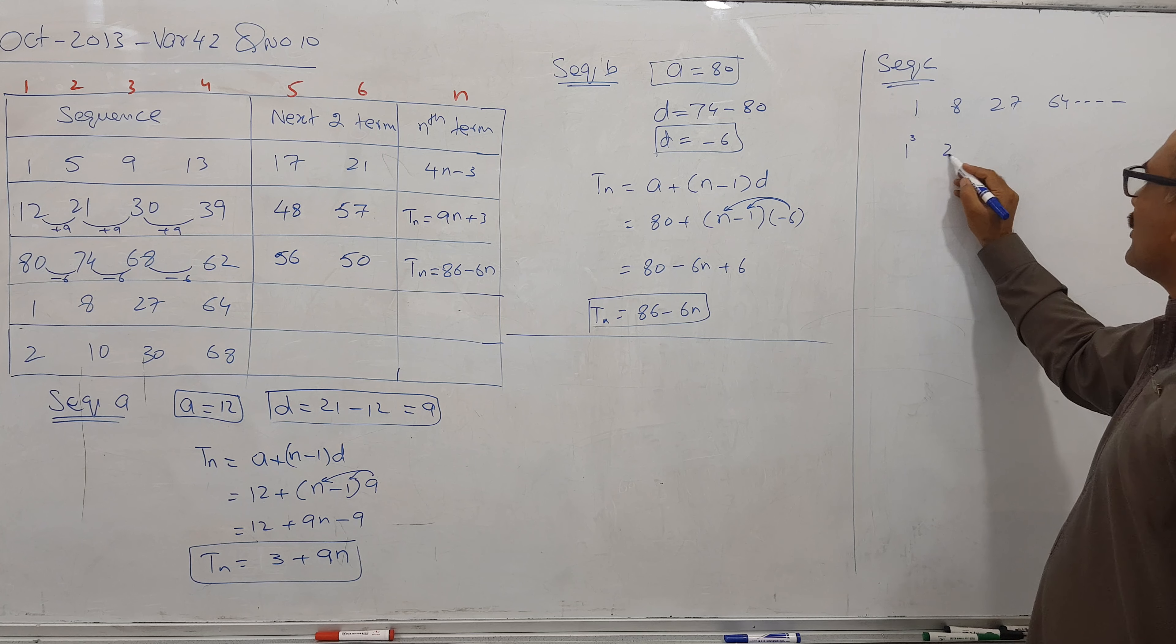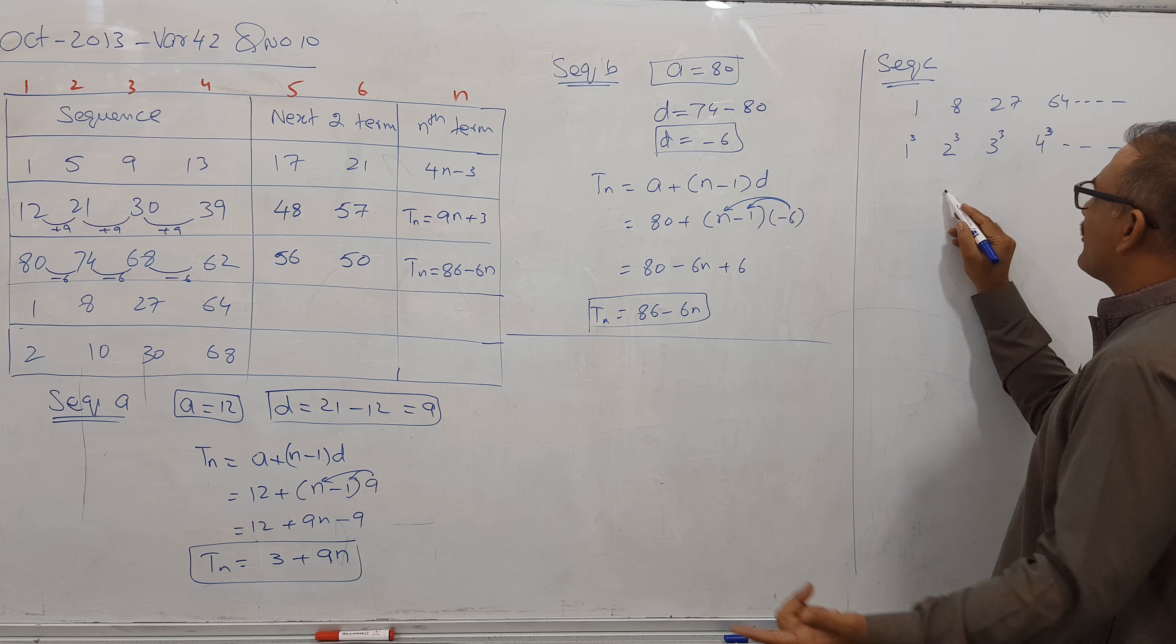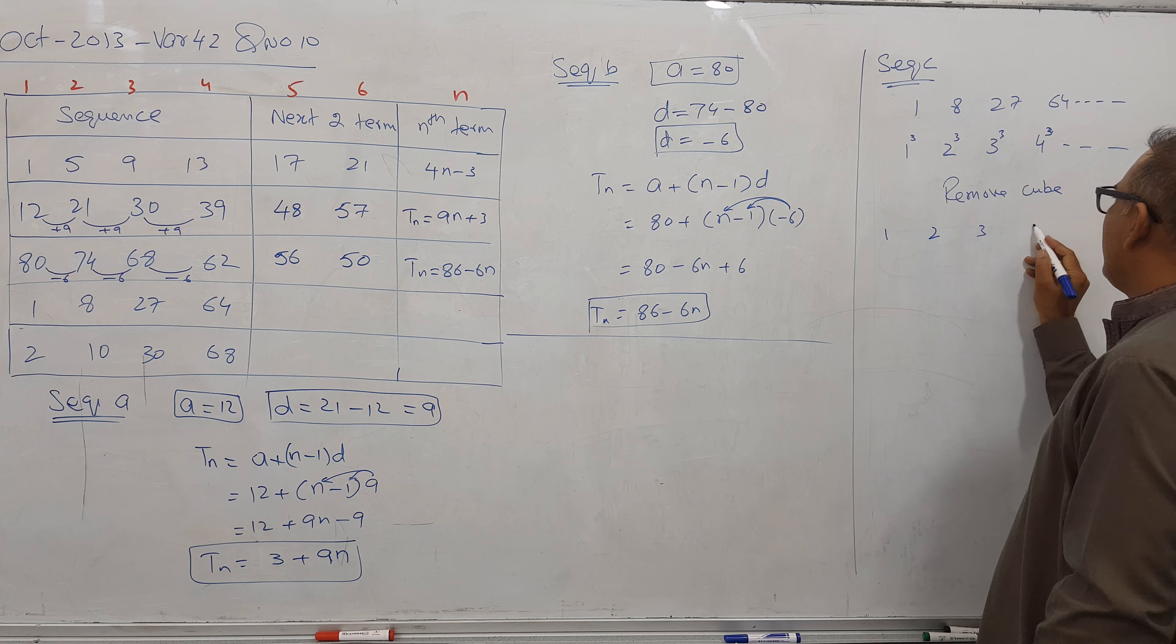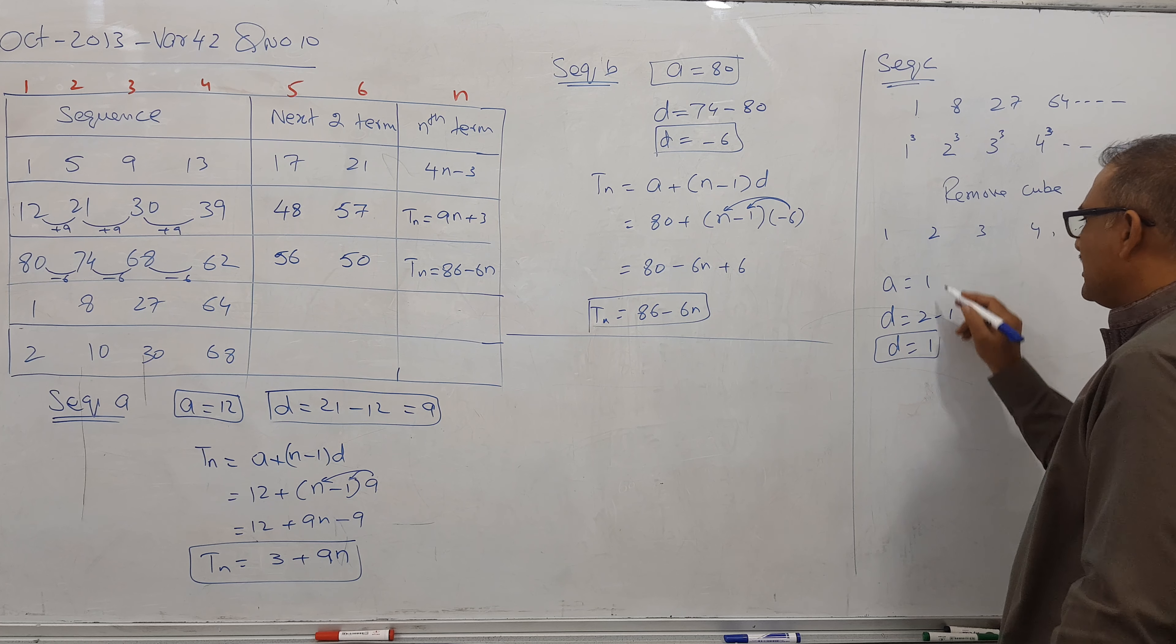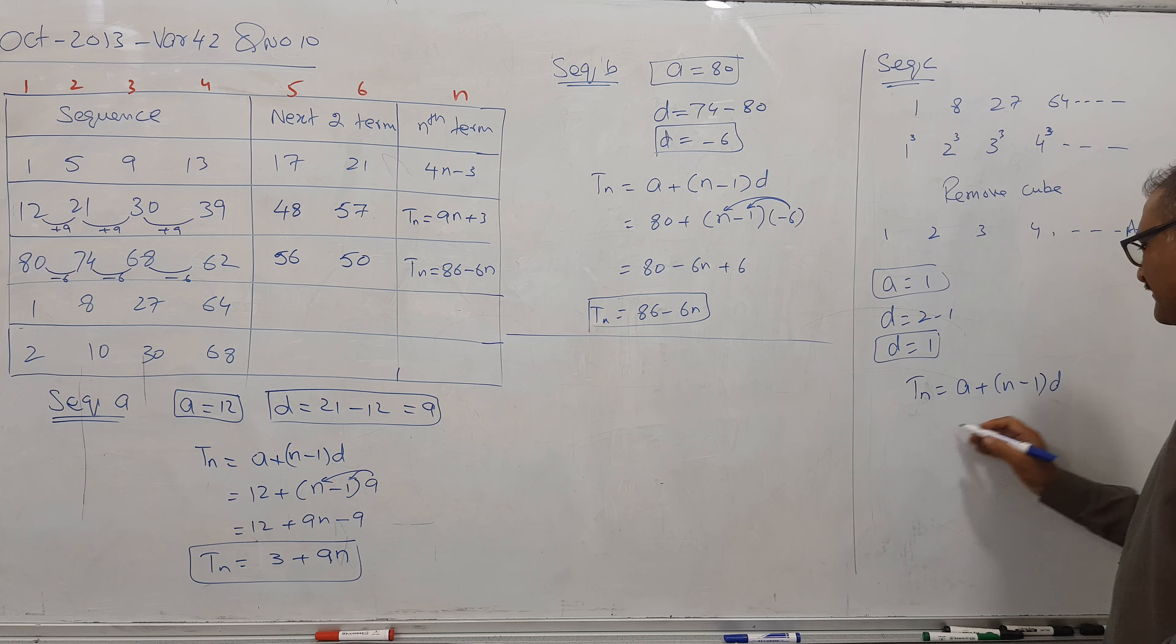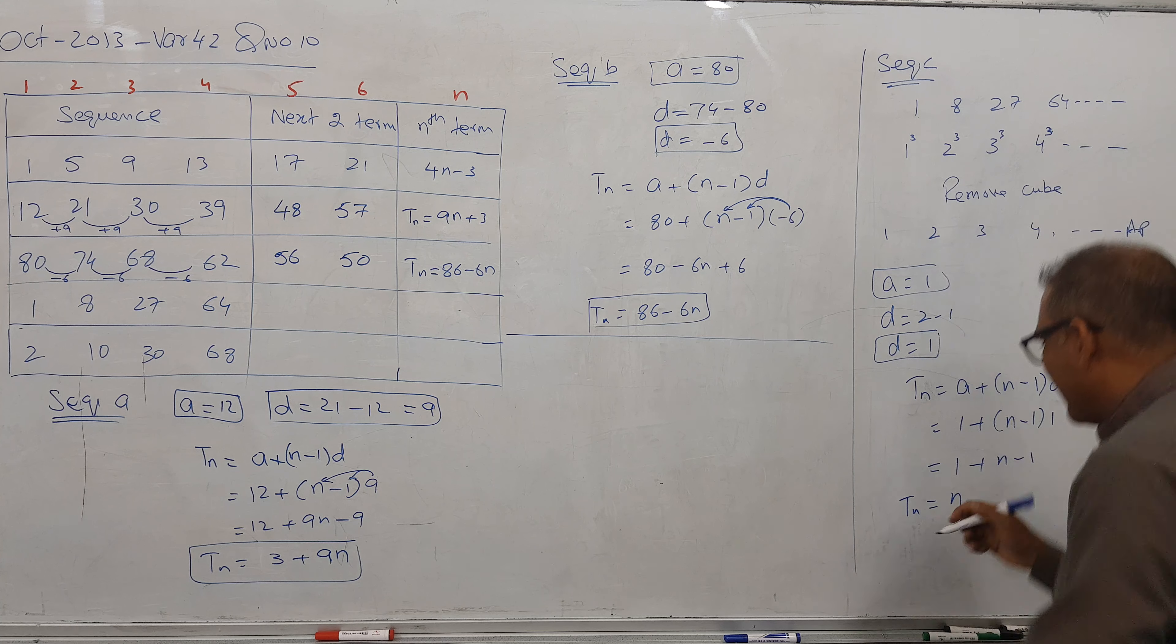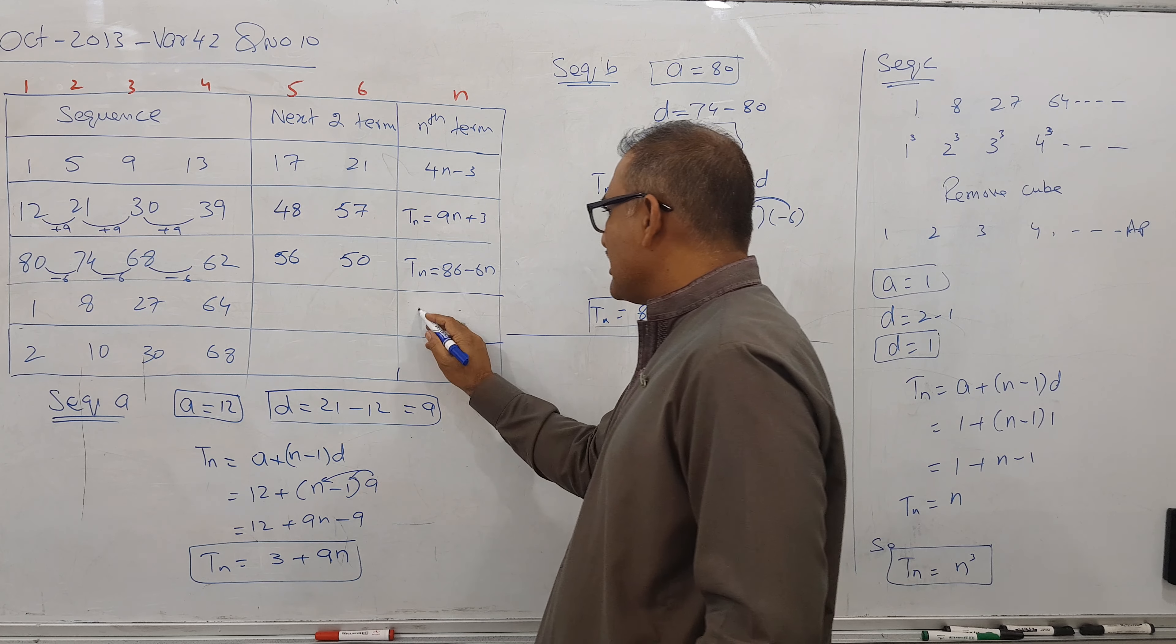So this is cube of 1, this is cube of 2, cube of 3, cube of 4. So it means these are cubes. So remove cubes for a while. 1, 2, 3, 4 and onward. So what is first term now? 1. And common difference is 2 minus 1 gives you 1. It means now it becomes AP. Formula is Tn is equal to a plus n minus 1 times d. This one comes here, these ones simplify. So 1, 1 cancel, we got nth term n. So first I remove the cube, now bring back. So nth term is n cube. This is our answer. Nth term is n cube.